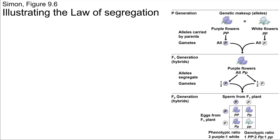This cross that we just looked at is called a monohybrid cross, which just means we're looking at just one trait in this cross. It's possible to have more complex situations where we might be investigating two traits at the same time — that would be called a dihybrid cross. But we're starting with the more simple scenario here, just a monohybrid cross.